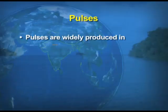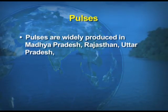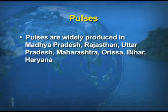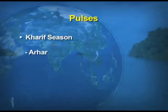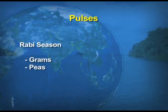Now we take up pulses. For purely vegetarian people, pulses are the primary source of protein in the diet. Pulses are widely produced in Madhya Pradesh, Rajasthan, Uttar Pradesh, Maharashtra, Odisha, Bihar, Haryana, and other states. Pulses are grown in both Kharif and Rabi seasons. Under Kharif: Arhar, Moong, and Urad. Under Rabi: grams, peas, and masoor.